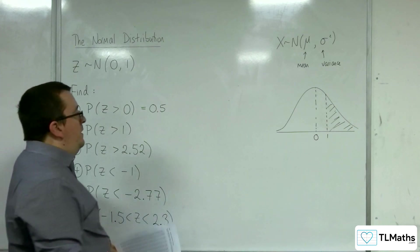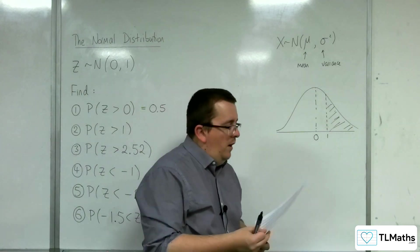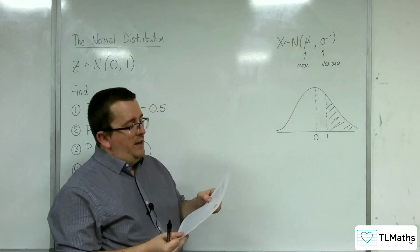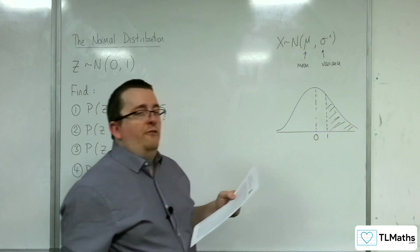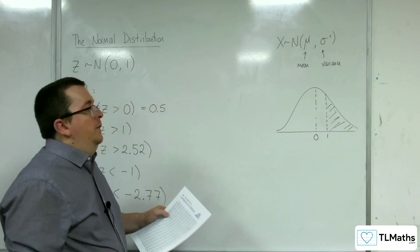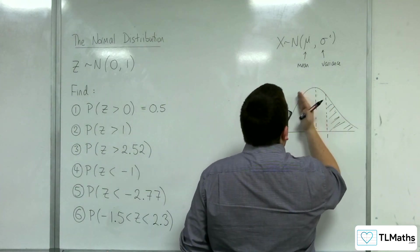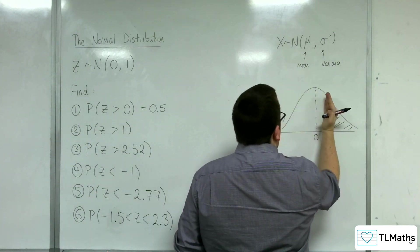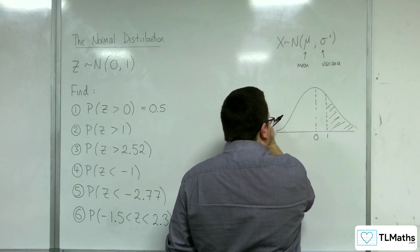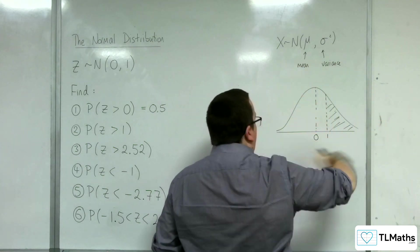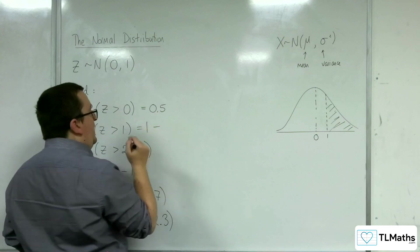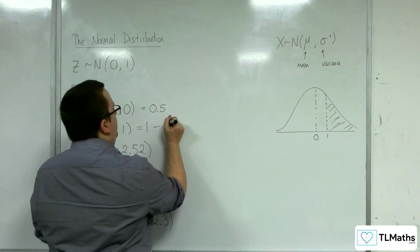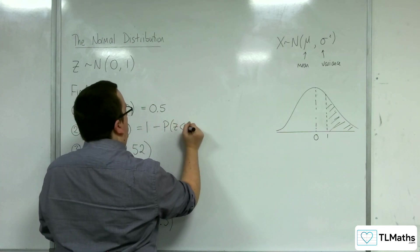So when we do this, you need to think, well I can look up the probability of Z being less than 1, which is 0.84134. So that describes this shaded area, the area to the left. So if the whole thing is 1, then this is the same as 1 take away the probability of Z being less than 1.